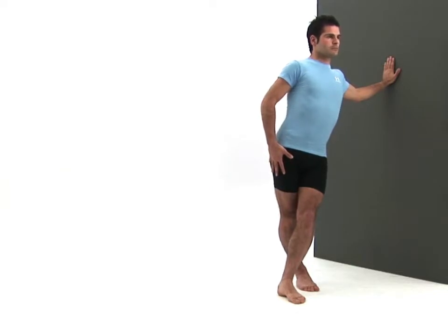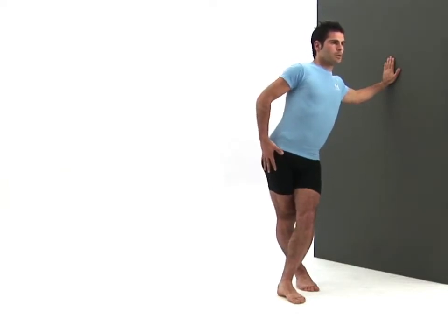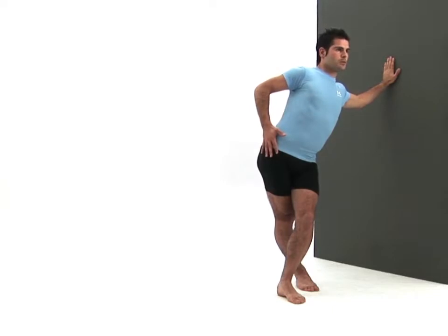Now take a deep breath in and as you breathe out, tilt your hips away from the wall directly to your side allowing your body to arch sideways. Try to prevent your upper body from leaning forward or back.